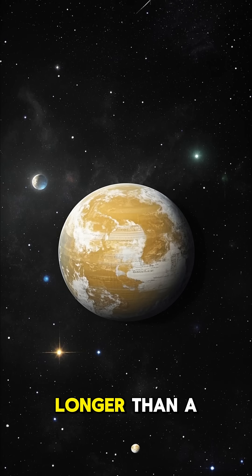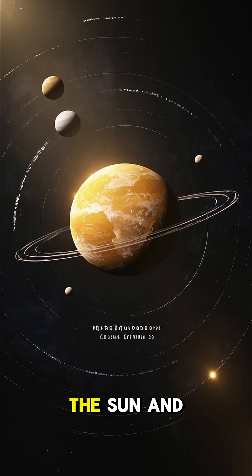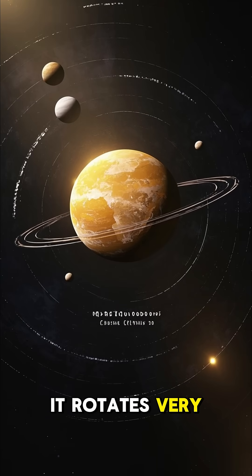Did you know that a day on Venus is longer than a year on Earth? Venus is the second planet from the Sun, and it rotates very slowly.